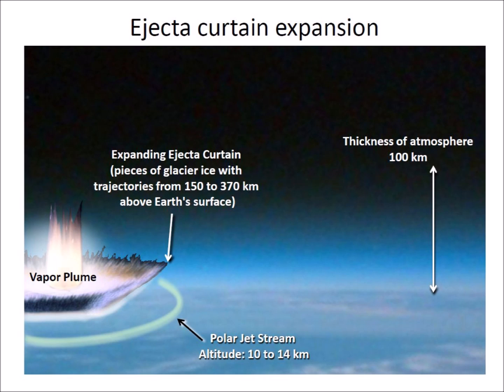In addition to the ejection of glacier ice boulders in ballistic trajectories, the extraterrestrial impact had two major atmospheric effects. The first one was the expansion of a vapor plume of steam produced by the high heat of the impact on the Laurentide Ice Sheet. The great pressure of the steam increased the speed of the ejecta and broadened the shape of the conical ejecta curtain.